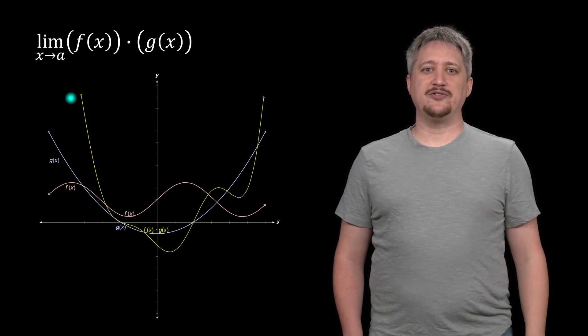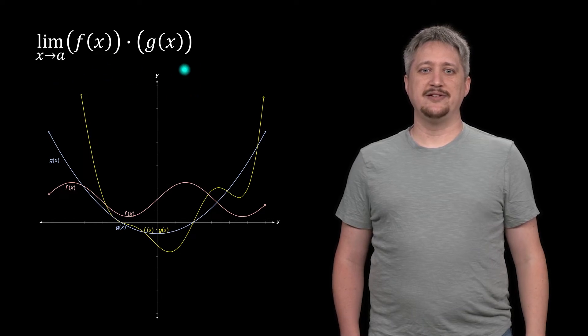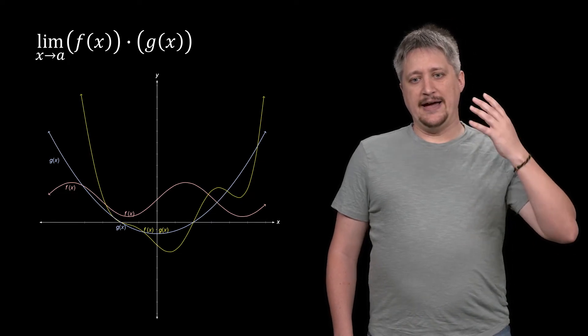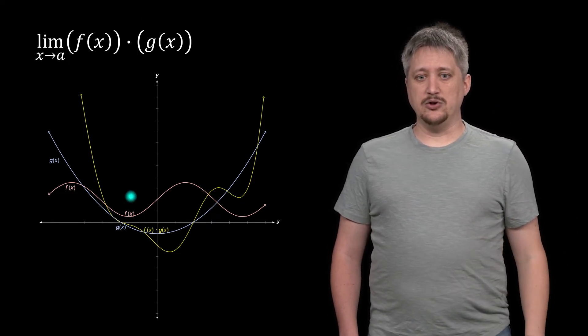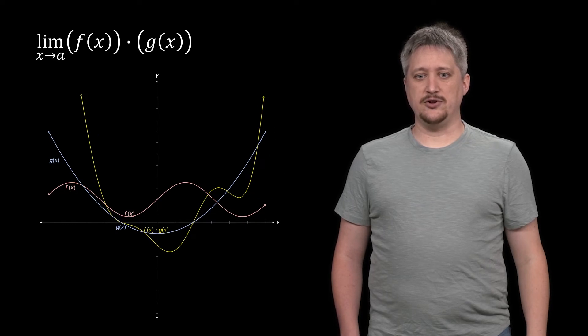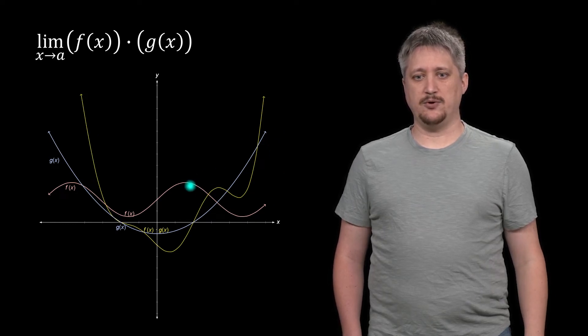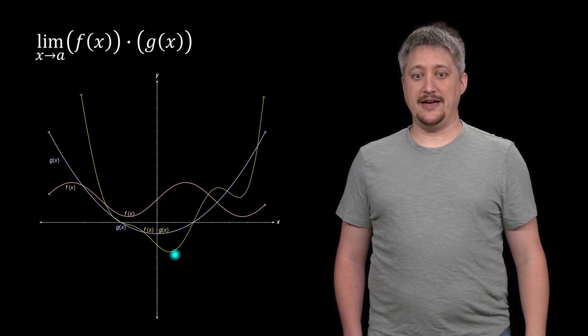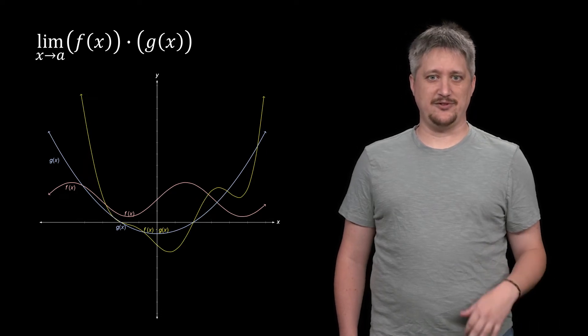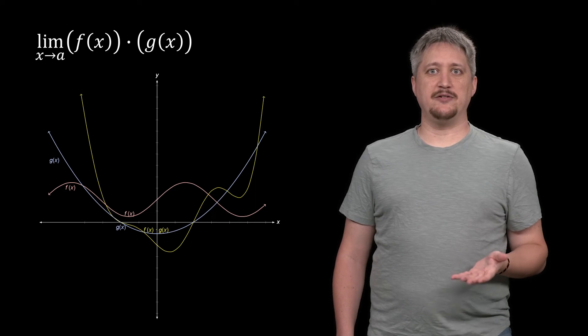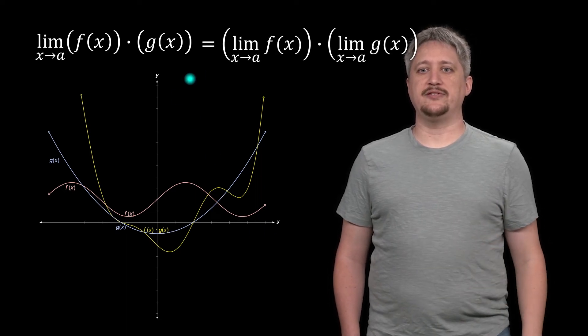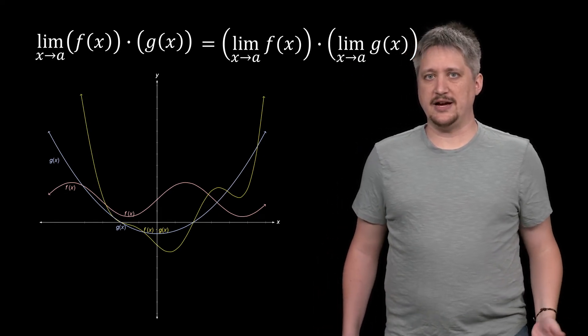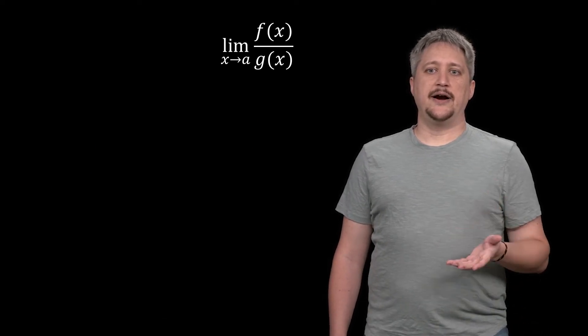For now, all we really want to focus on is what happens when we do f times g. Even though the product looks weird, we can still see that nearby given points, as long as f and g are relatively well behaved, f times g is relatively well behaved. So in this example, the limit of the product can be broken apart into this product of limits: limit of f times limit of g.